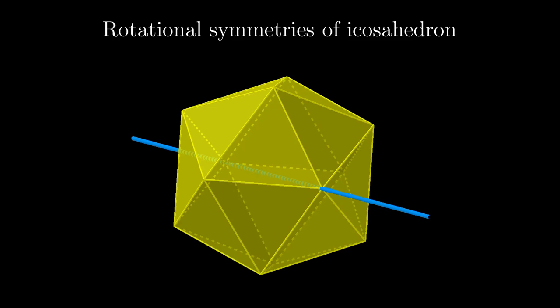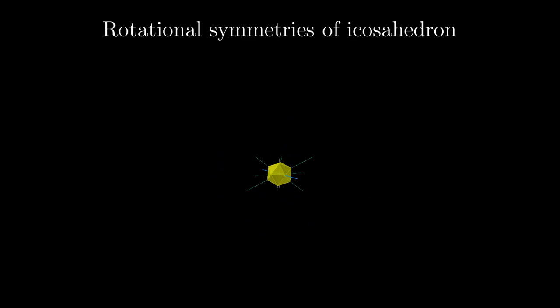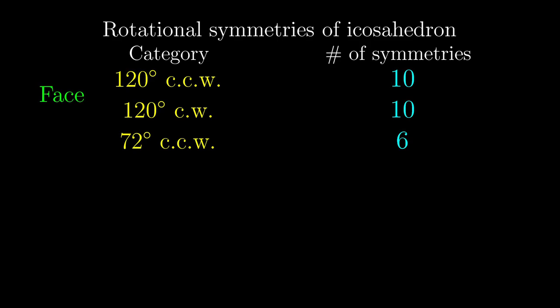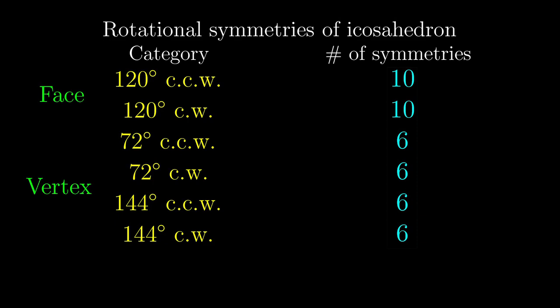Another obvious category of symmetries involved this 72 degree anticlockwise rotation. This time, there are 6 axes, so again, we can crush these 6 symmetries into a single category like before. And again, very similarly, we can obtain the clockwise rotations and the 144 degree rotations.